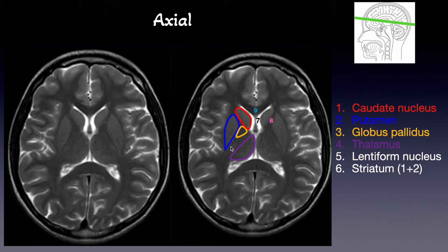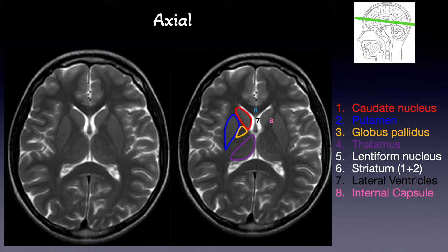We've already talked about the lateral ventricles. Then we can see very good outline here of these structures — it is darker — and that is what we call internal capsule. We've already talked about the white matter. And here we can see the fibers that connect the two hemispheres of the brain, the left and right — that is what we call corpus callosum, here and here.